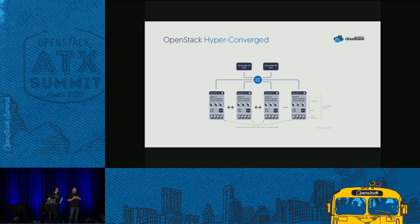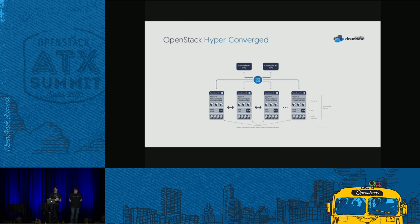Storage Spaces Direct leverages Scale-Out File Server based on SMB3 technology. You can also use SMB Direct with RDMA-enabled NICs to exploit extra performance thanks to offloading. We also provide Cinder integration with that technology to help enable OpenStack hyper-converged deployments.